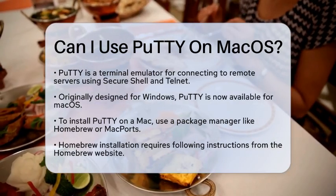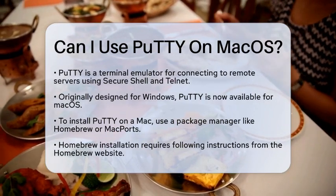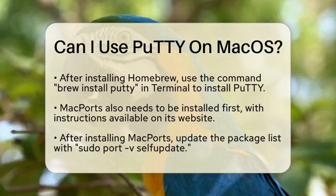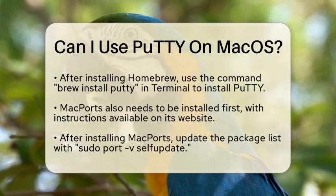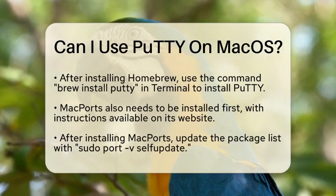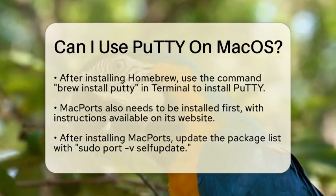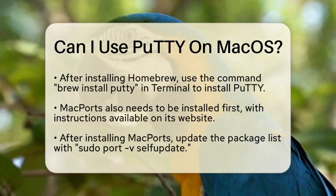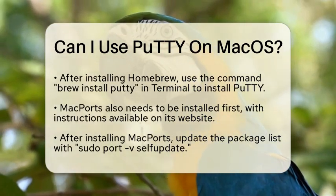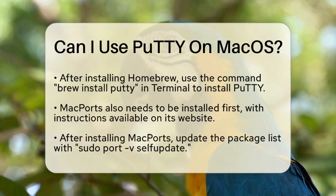To get started with PuTTY on your Mac, you will typically use a package manager. The two most common options are Homebrew and MacPorts. If you do not have Homebrew installed, you can easily set it up by following the instructions on the Homebrew website. Once you have Homebrew ready, open your terminal application, type in the command 'brew install putty', and hit enter. This will download and install PuTTY for you.